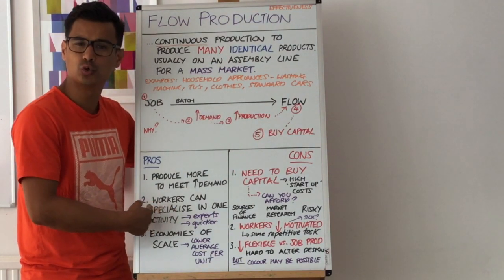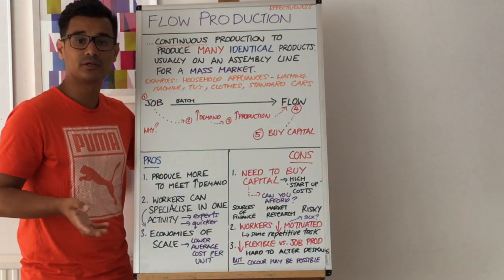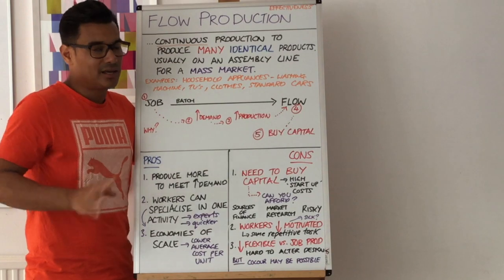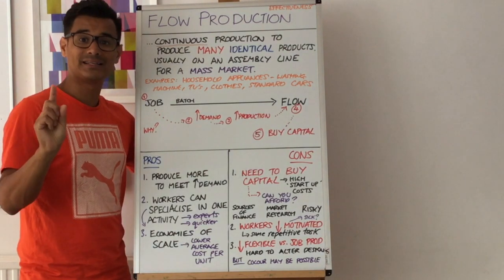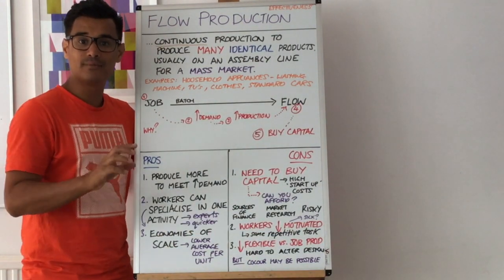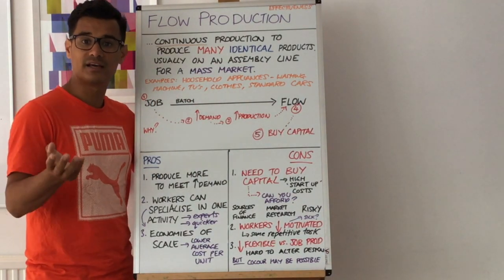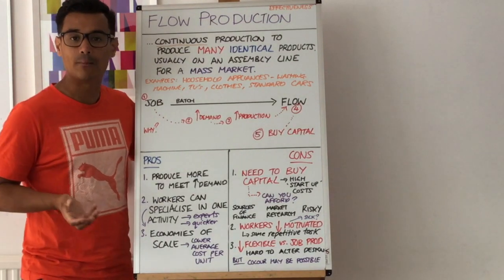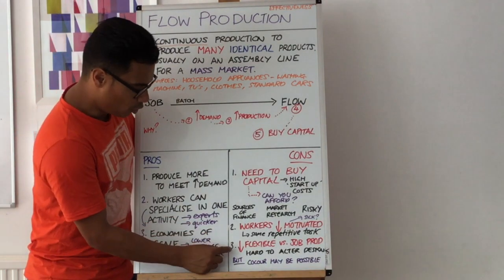Second con: workers become less motivated. As production becomes continuous and workers specialise in one task, repeating the same activity over and over — perhaps nine to five, five days a week — can become boring. However, you could argue back that if the business is smart and implements cross-training, workers can move to a different area of the assembly line after a month, learning new skills. This can keep them motivated, increase productivity, and prevent demotivation.